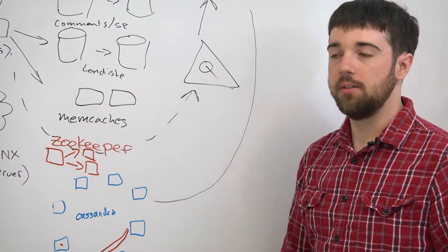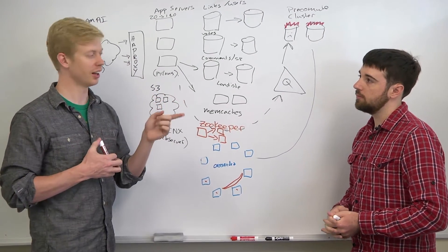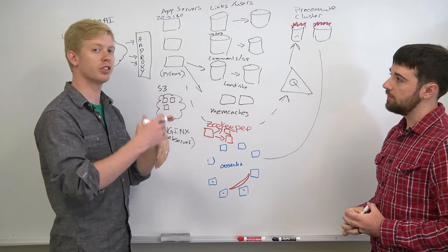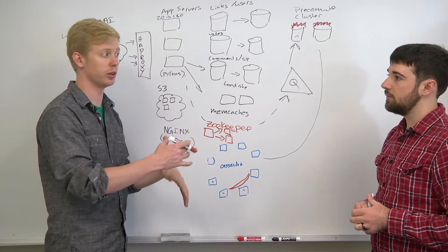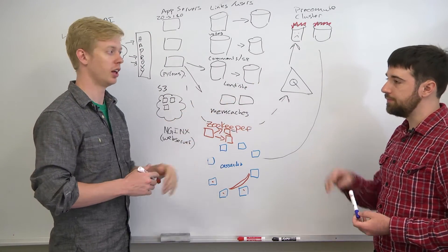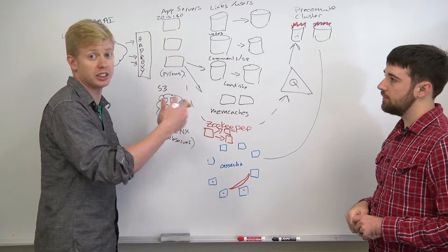That reminds me of one thing that was always a challenge, and I don't know the answer to this one already, is when we had all these app servers, the app servers had all this configuration. A lot of the configuration was basically part of the code. One example would be, how many memcache boxes do you have? Because the memcache library would exist on the app servers, and that's where the hashing would happen, for example.